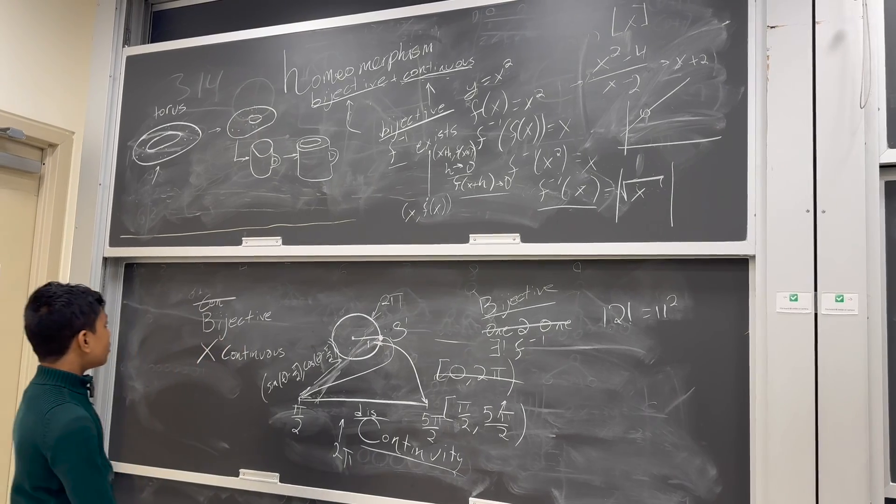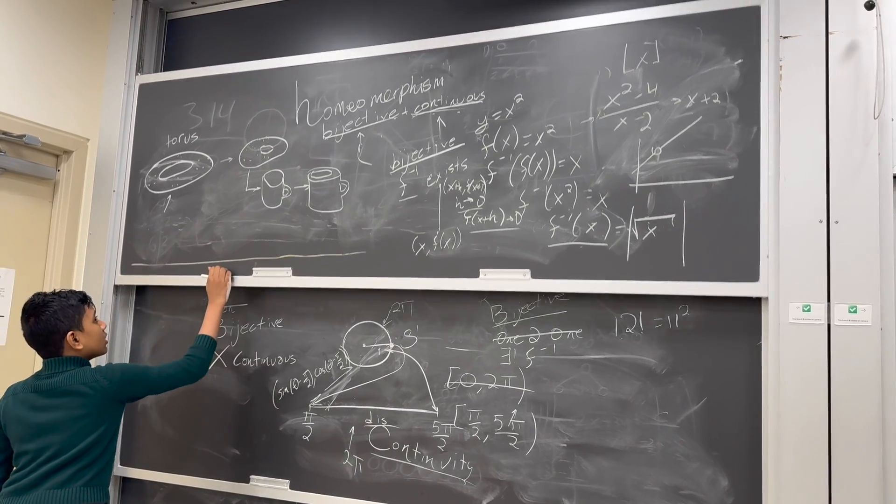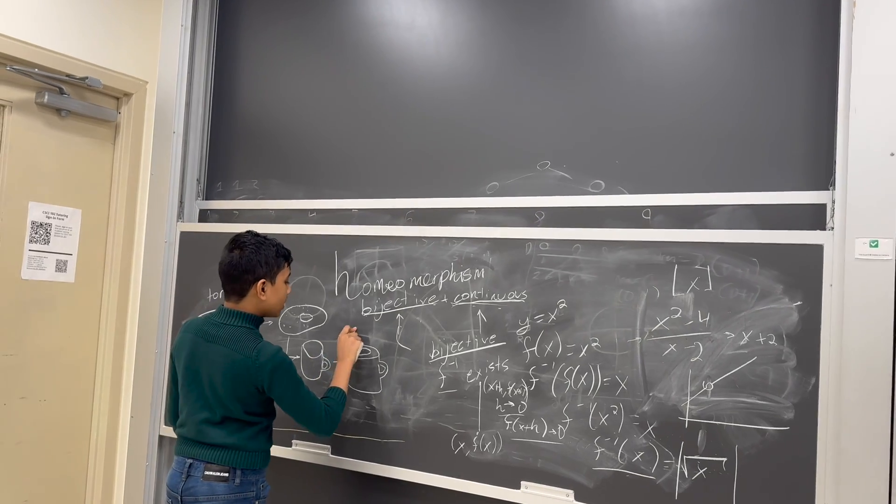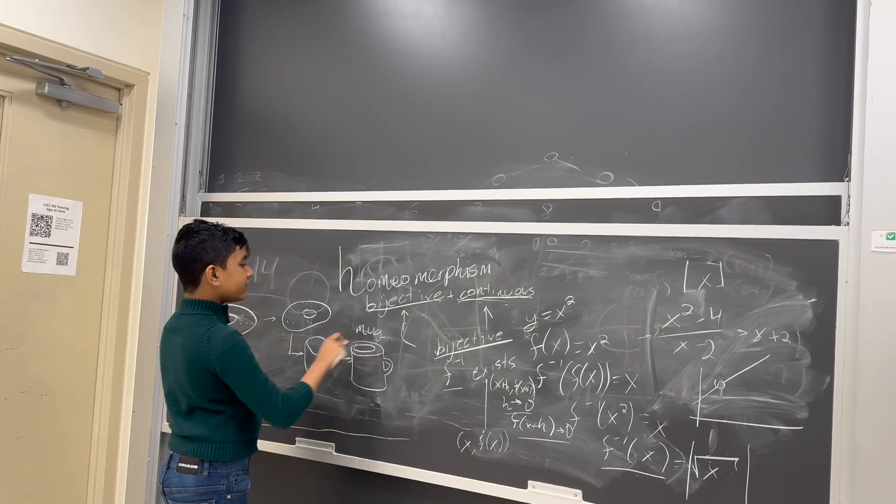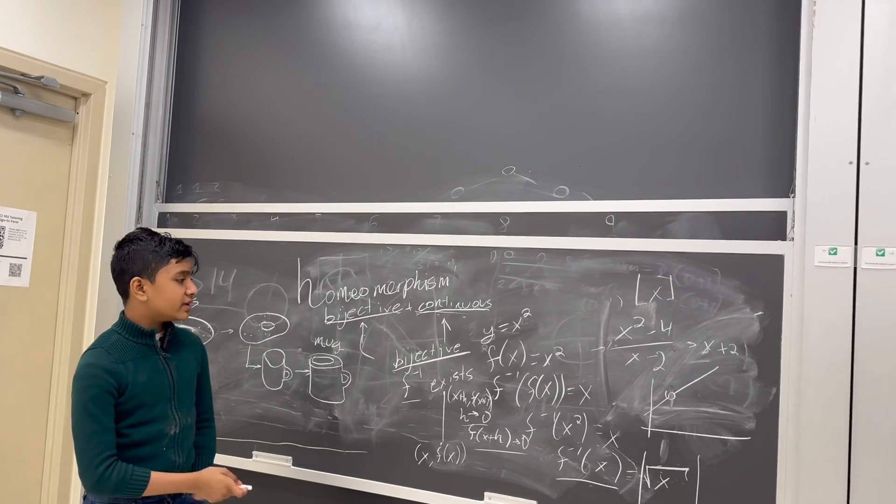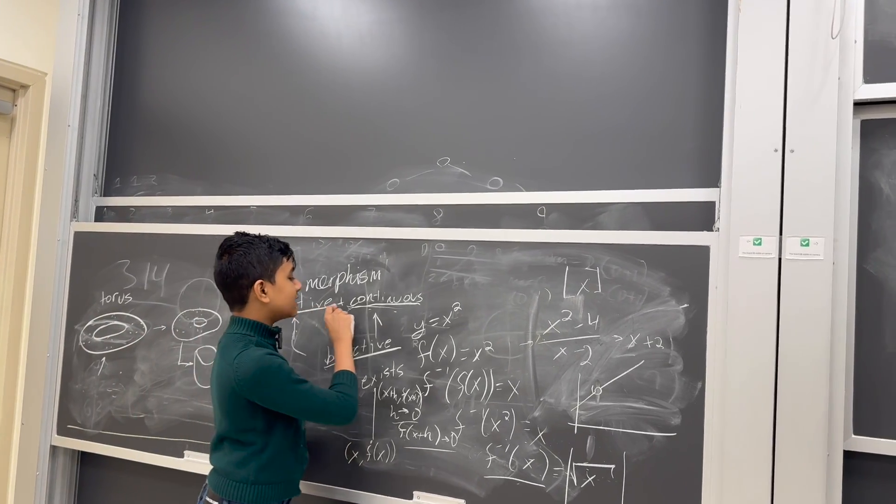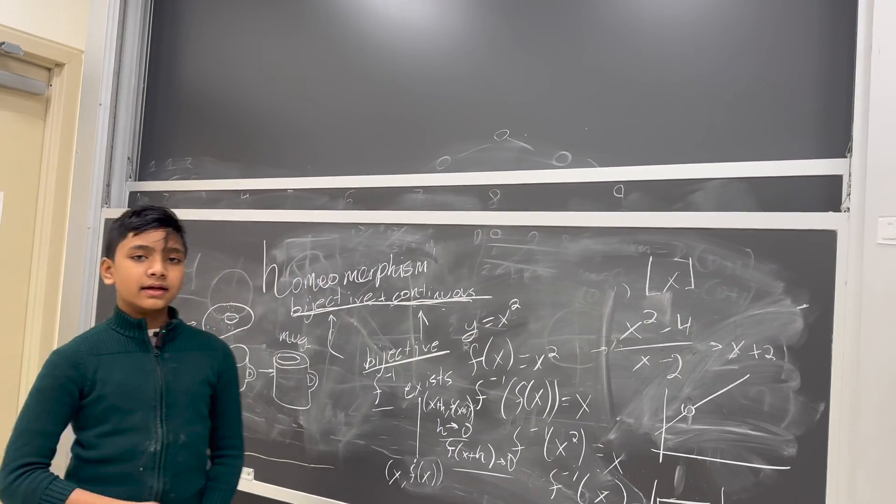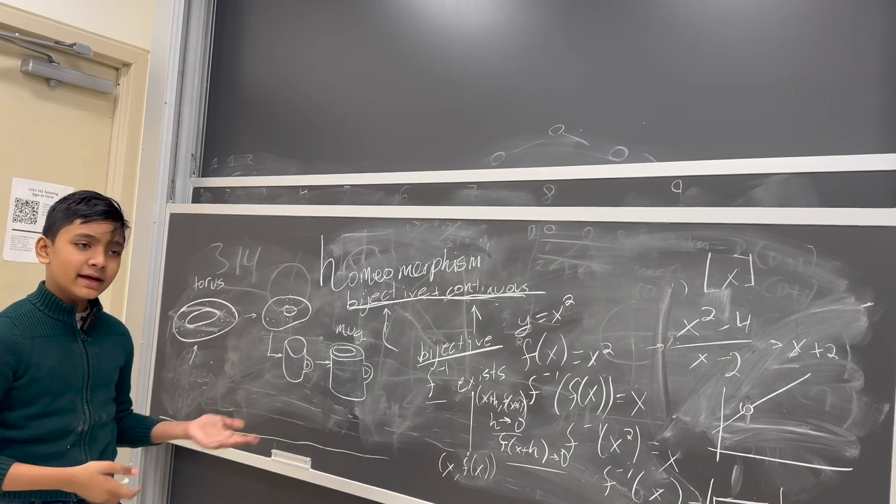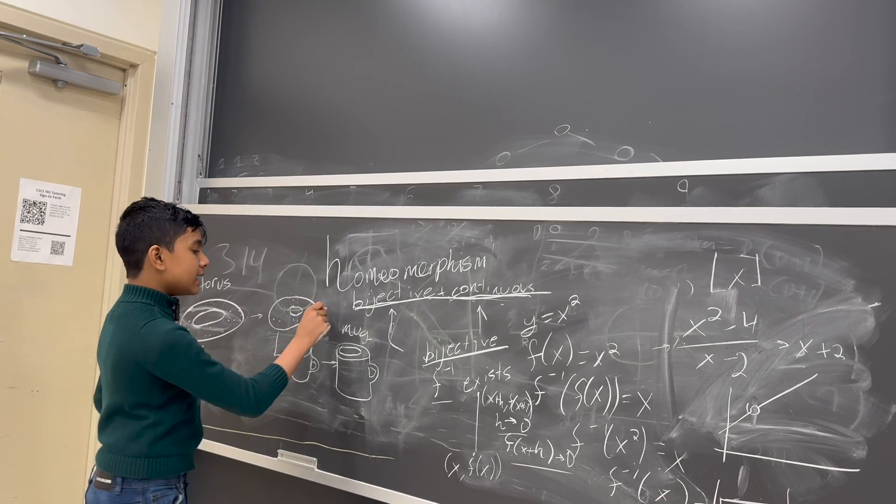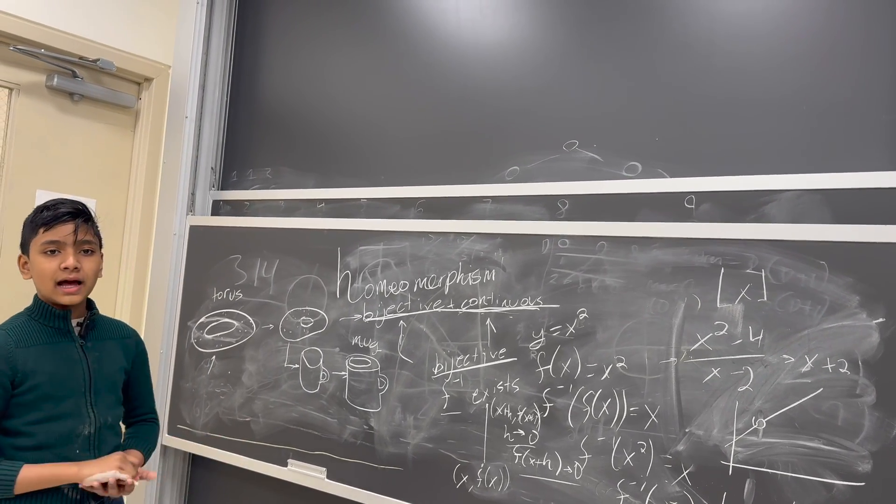Still, ridiculous things like the torus turning into the coffee mug are often technically homeomorphisms because of how lax this definition is. Then again, it's not a real policy or anything. Doesn't need to get more strict. It's just a mathematical concept and it's useful as well.